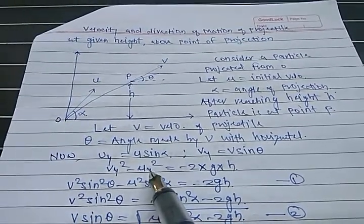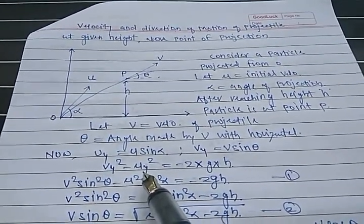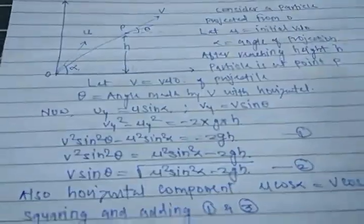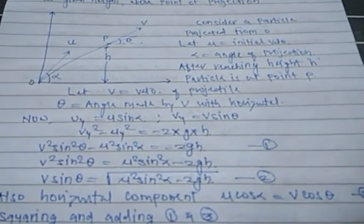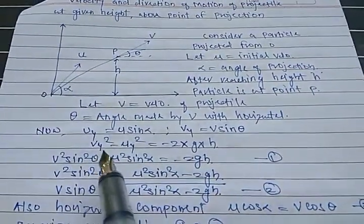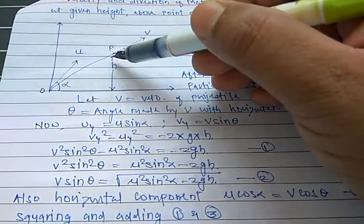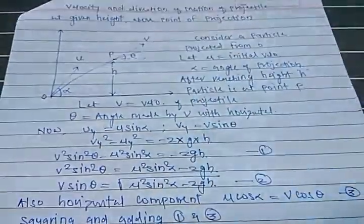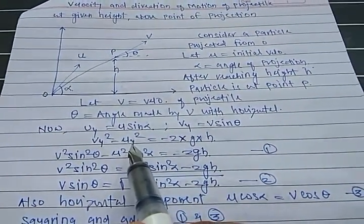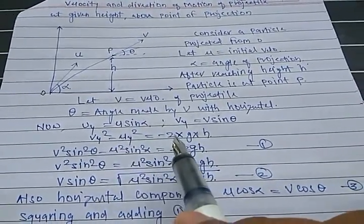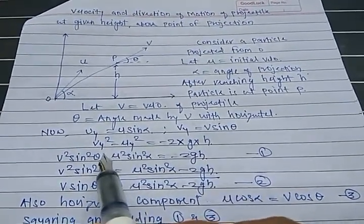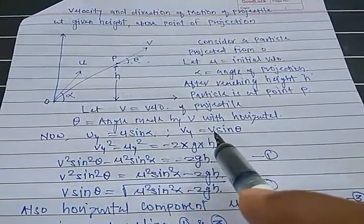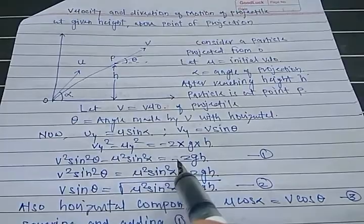Now, applying Vy² minus Uy² using the formula V² minus U² = 2As. Here, instead of A we use minus G, and instead of S we use H. So Vy² minus Uy² = minus 2GH. Substituting: V² sin² theta minus U² sin² alpha = minus 2GH.